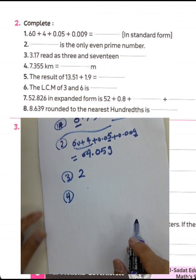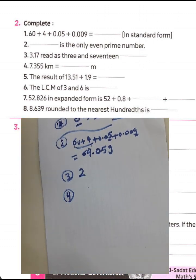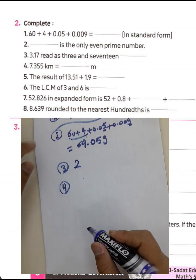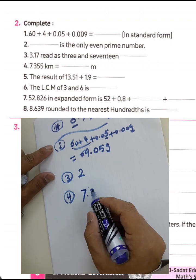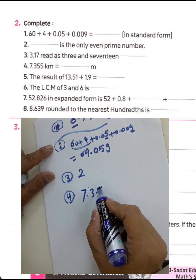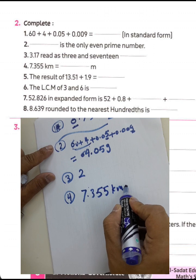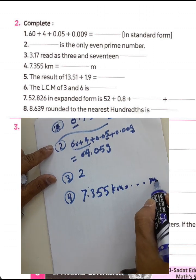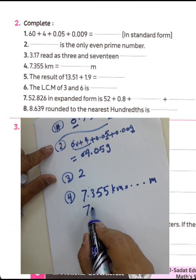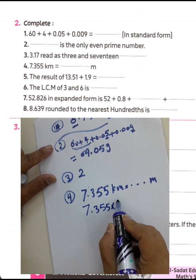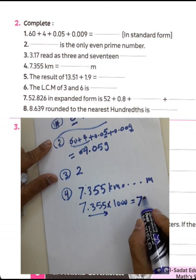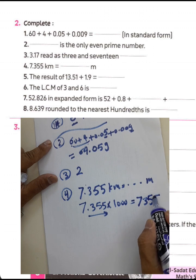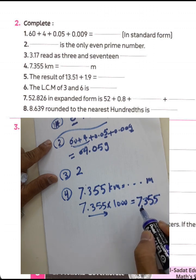Question 4: We know any prime number has only two factors — you can divide it by itself and by one only. Question: 7.355 kilometers converted to meters. Multiply by 1,000: move the decimal point right by three places to get 7,355 meters.